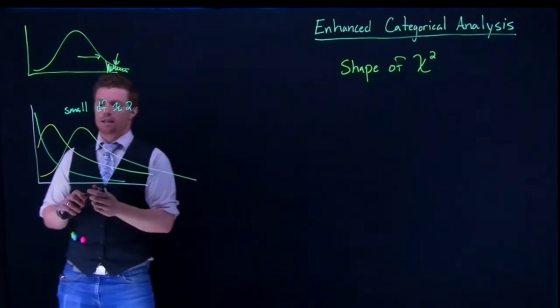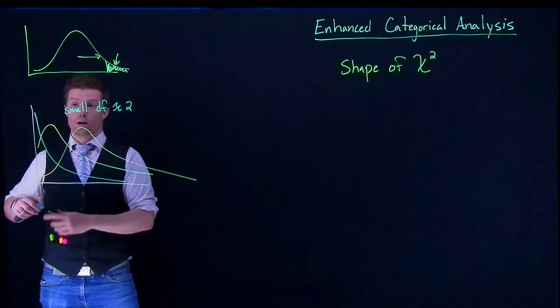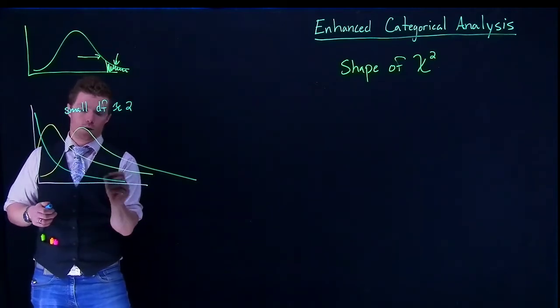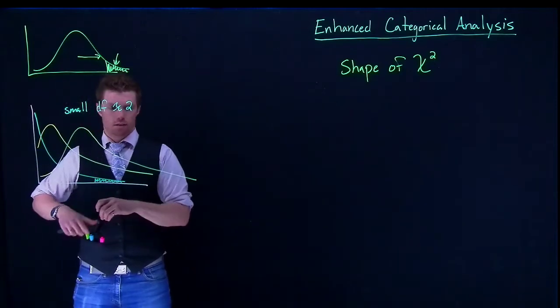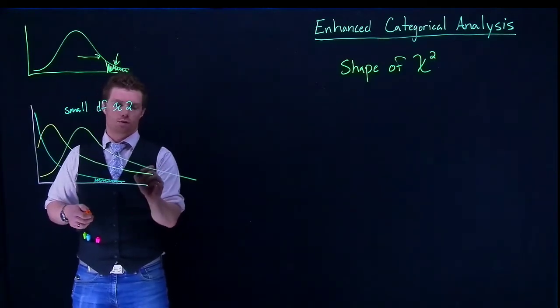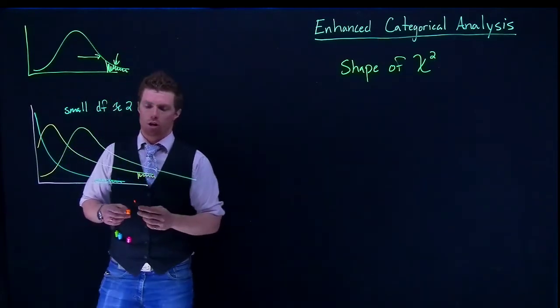How we calculate our p-values is still the same. Whatever we calculate for our chi-squared, we go out so far and find the area under the curve. Same thing with these—we go out so far and find the area under the curve.